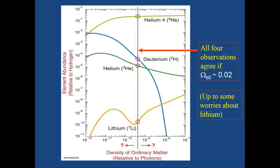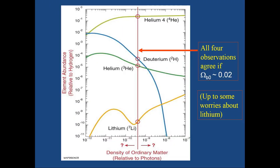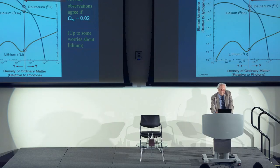A graph of element abundances versus the density of ordinary matter relative to photons shows predictions for helium, deuterium, helium-3, and lithium. There is only one value of the baryon density at which all four measurements agree, corresponding to a normalized baryon density of 0.02 — much less than the critical density. This is a powerful confirmation of Big Bang nucleosynthesis.